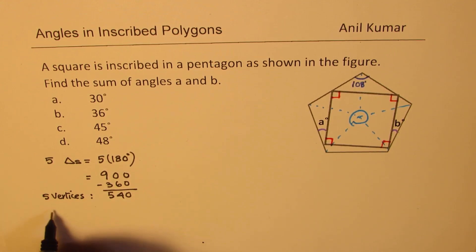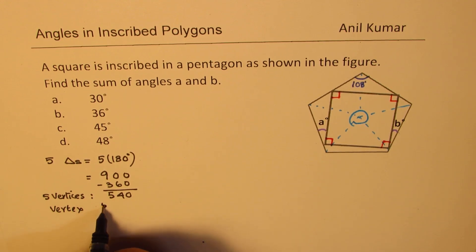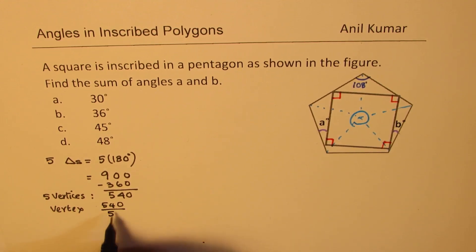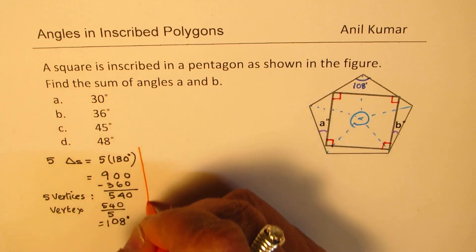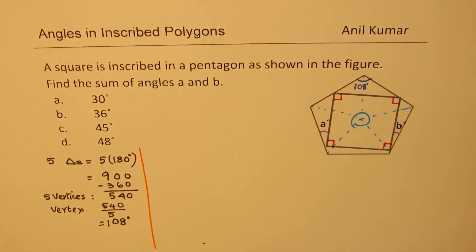Now each vertex will have 540 divided by 5. So that gives you the angle, 108 degrees. So it's important to understand this part, that each angle for a pentagon interior angle is 108 degrees.